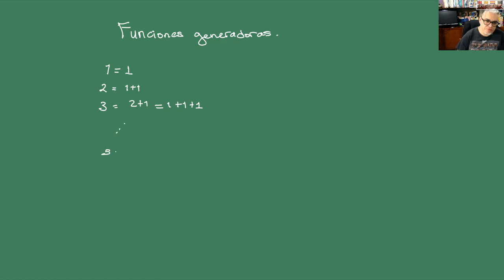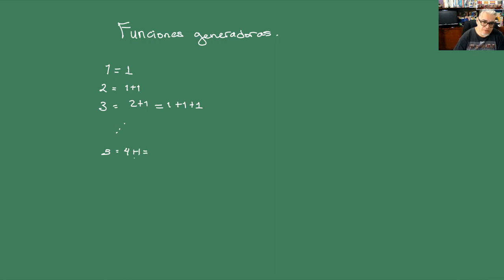Por ejemplo, el 5 lo podemos escribir como los anteriores: 4 más 1. El 4 a su vez lo podemos poner con el anterior más 1 más 1, que es como 2. Entonces podríamos dejarlo como 3 más 2, o como 3 más 1 más 1, o como 1 más 1 más 1.